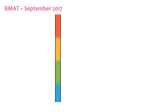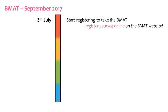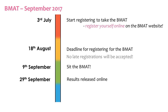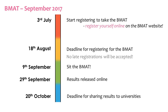Here are the key dates for the September 2017 BMAT. On the 3rd of July, you can start to register for the September BMAT. You won't be able to do this through your school and must do it yourself online on the BMAT website. The deadline for registering is the 18th of August, and late registrations will not be accepted. At this stage, you'll have the choice to select the universities which will be sent your BMAT results, but it's probably a better idea to wait until you've seen your results and confirmed your UCAS choices. On the 9th of September, you'll sit the BMAT, and on the 29th of September, your results will be released to you online. You'll be able to share your results with universities until the 20th of October via the BMAT website.